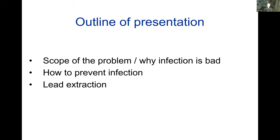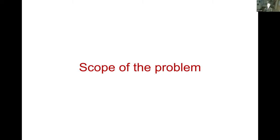We're talking about three different types of device infection, categorized in order of seriousness. First, we sometimes see soon after implantation a superficial incisional infection — it may relate to suturing, there may be a small stitch abscess. The infection is just confined to the skin and is not too much of a problem as long as it's recognized quickly and treated before the infection spreads down into the pocket where the device itself is implanted.